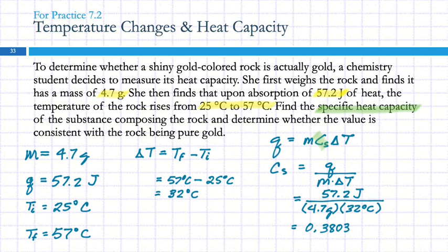So 57.2 divided by the quantities, parentheses, 4.7 times 32, close the parentheses, equals 0.3803. I'm looking at these numbers to figure out how many significant figures my final answer should have. I've got 3 and 2 and 2. So that should have two sig figs. And then the units on this, I'm just going to look at the units that didn't cancel out. Well, nothing canceled out. So the units are joules per gram times degrees Celsius.